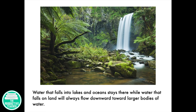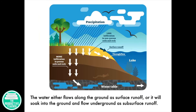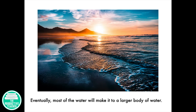Water that falls into lakes and oceans stays there, while water that falls on land will always flow downward toward larger bodies of water. The water either flows along the ground as surface runoff, or it will soak into the ground and flow underground as subsurface runoff. Eventually, most of the water will make it to a larger body of water.